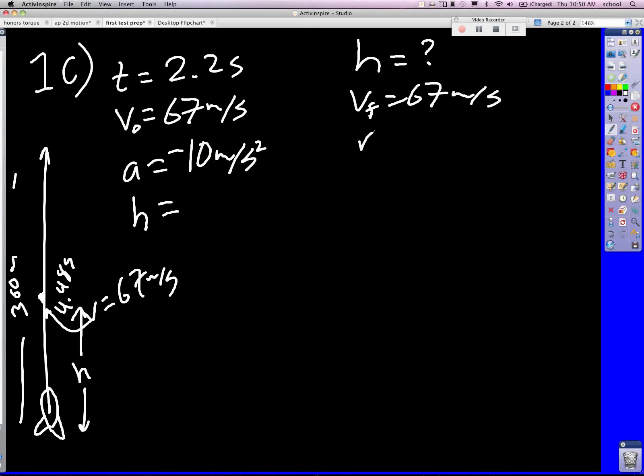So then at this point, we can now say VF squared equals V zero squared plus 2AX or 2AH as the case may be. So X, which is equal to H, is going to be VF squared, this is zero, VF squared all over 2A. So 67 squared divided by 60.